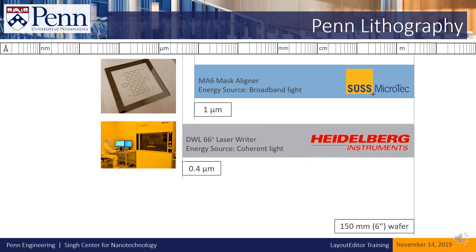If you'd like to make photo masks for use in the mask aligner, or print features down to around 400 nm in minimum feature size, you should consider using the Heidelberg DWL66PLUS LaserWriter. This tool writes on samples directly, so exposures take longer than on the mask aligner, but it's capable of printing smaller features.